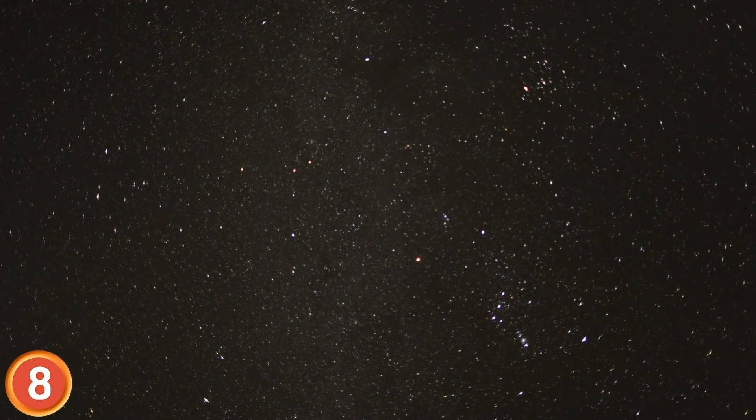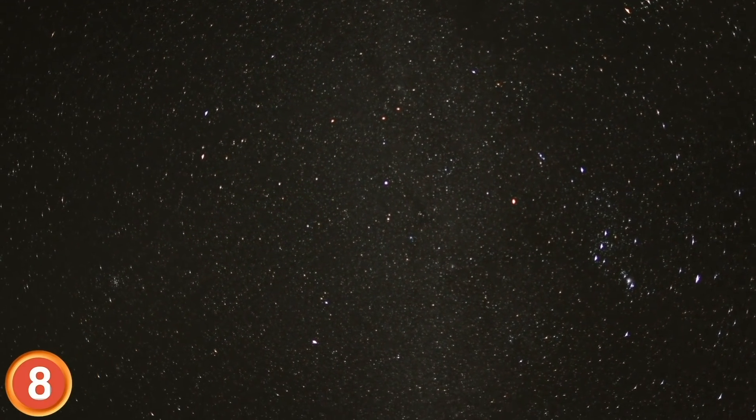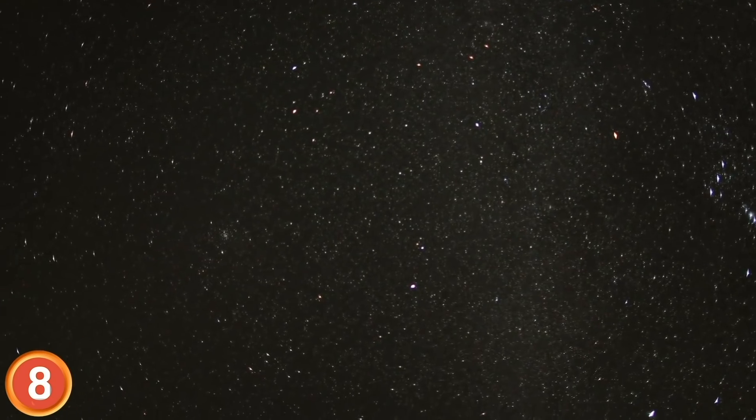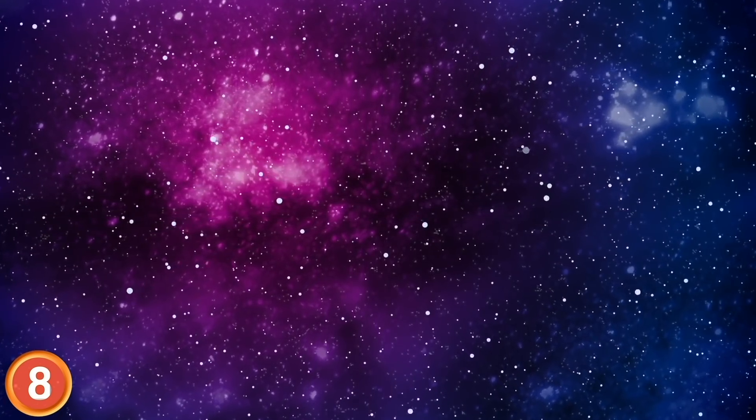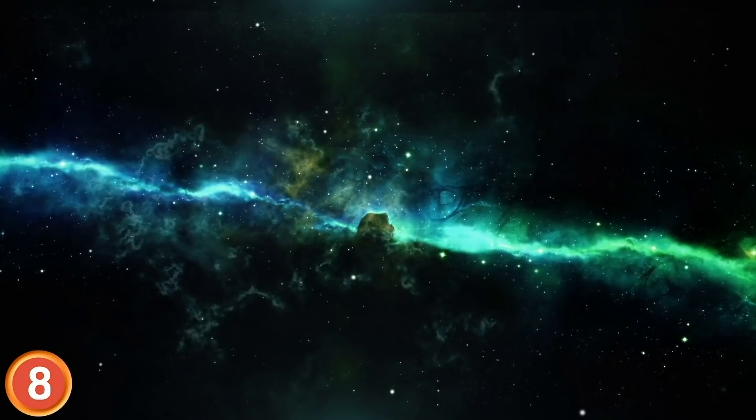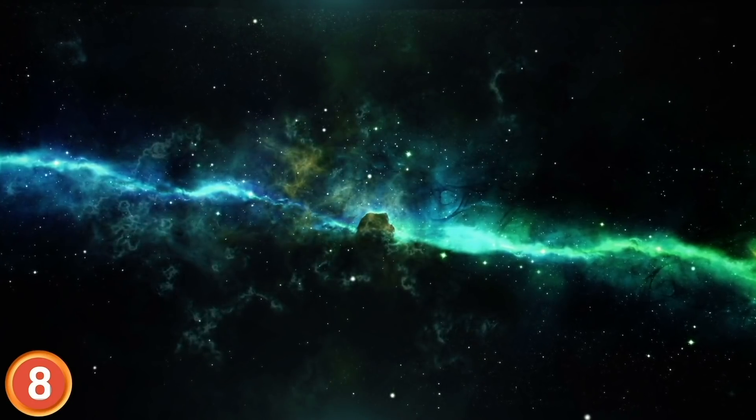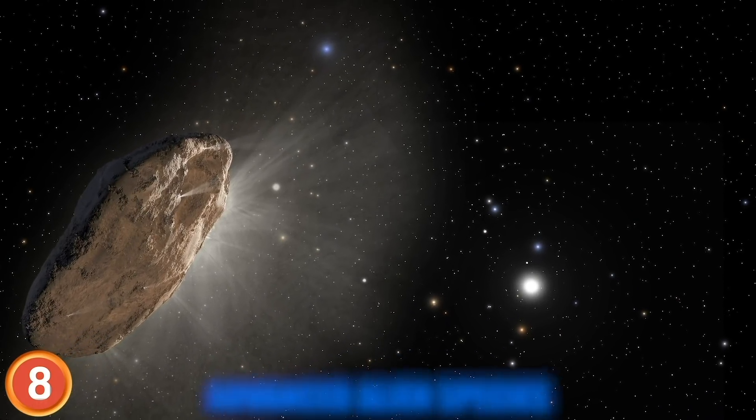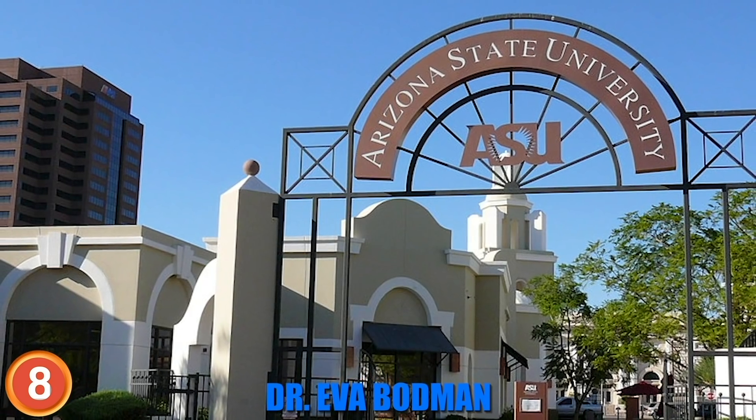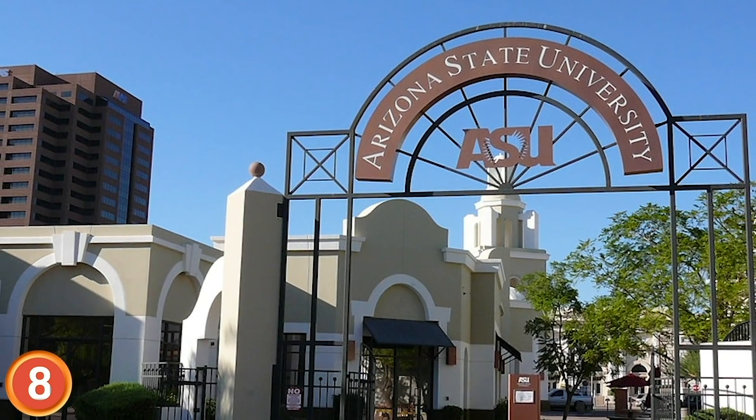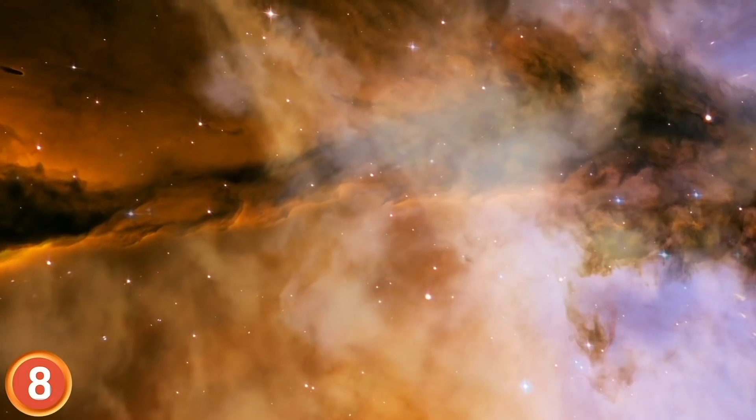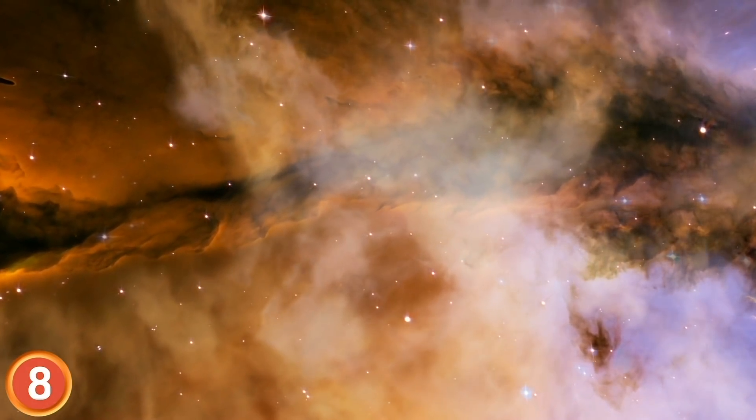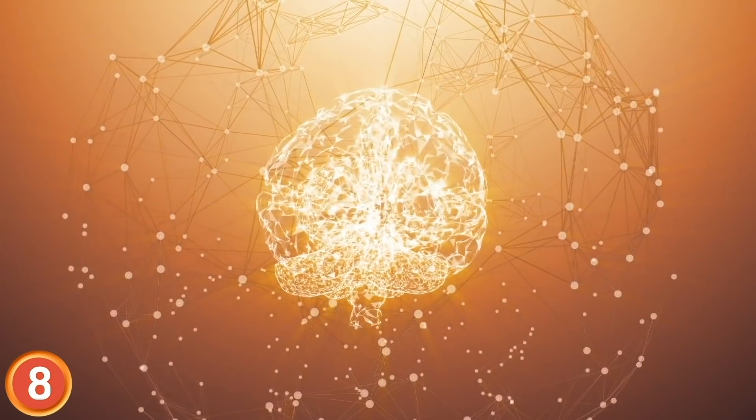Some other stars will dim and brighten as other planets pass in front of them, but there seems to be no rhyme or reason to Tabby's star. One theory is that the cause of the dimming may be a mega structure built by an advanced alien species to harvest the star's energy. Dr. Eva Bodman at Arizona State University is skeptical of that theory however and suggests the dimming may be due to complex clouds of space dust. Either way Tabby's star has scientists all over the planet scratching their heads.